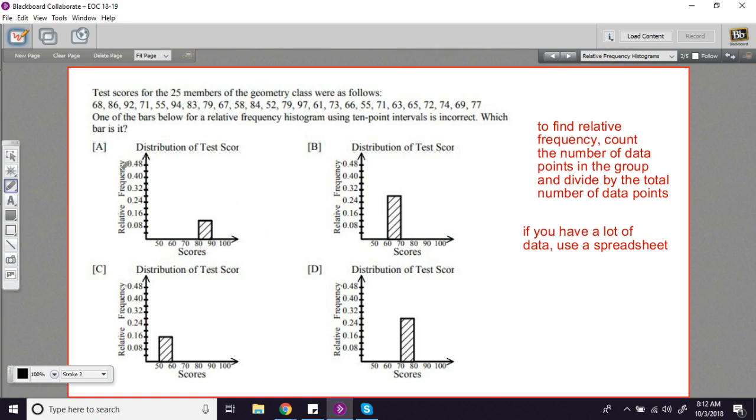A relative frequency histogram is almost the same as that, except the height of the bars isn't the number of data points. It's the number of data points divided by the total number of data points in the set. So what you're actually getting is a percentage of the whole group of data. The size of the bar is a percent of the whole number of data.